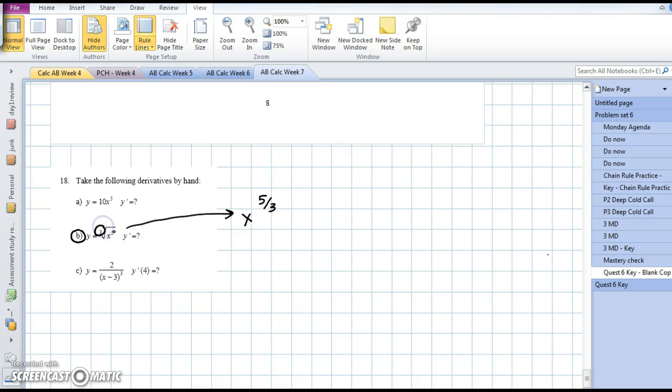This will be the fraction, this will be the upper power. So our power rule says we bring the 5 thirds down. We have 5 thirds x to the 5 thirds minus 1, but I'm going to rewrite 1 conveniently as 3 over 3.